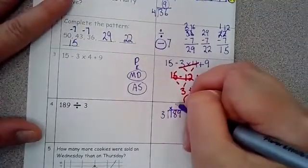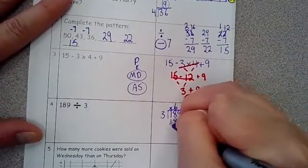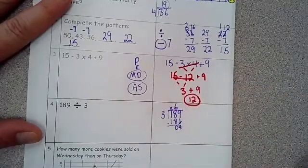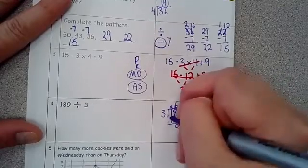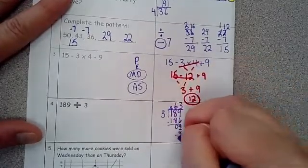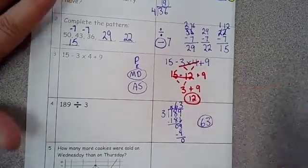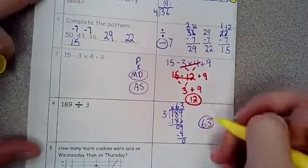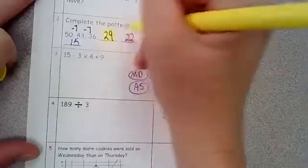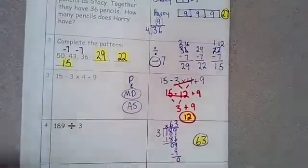Now how many threes are in 18? There are six. Six times three is 18. When you subtract you get a zero. Bring down the nine. The new number that I'm dividing into is nine. How many threes are in nine? Three. Three times three is nine. Subtract you get a zero. Your answer is 63. Okay. Oh, I just realized I didn't highlight any of my answers. So there they are.